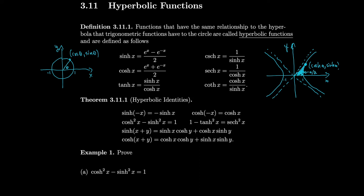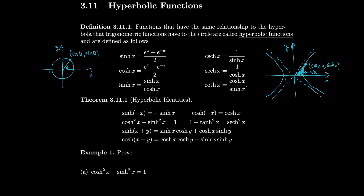So when we look at our unit circle, we're looking at functions of an angle. All the trig functions take an argument of an angle. All of our hyperbolic functions take an argument of an area, which we call the hyperbolic angle — even though it's not an angle, they're functions of area. Remember that for the unit circle it was x² + y² = 1, and for our unit hyperbola it's x² − y² = 1.